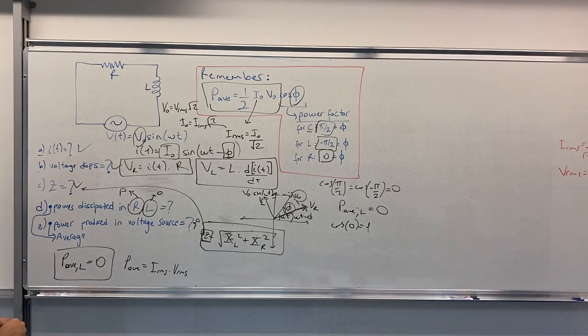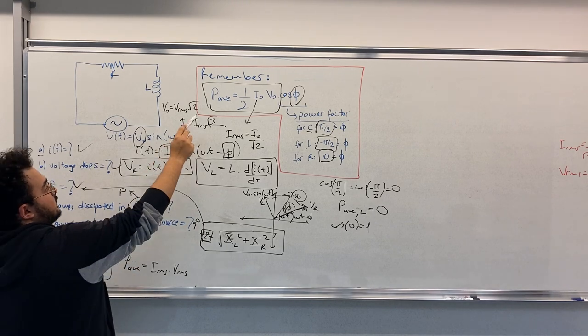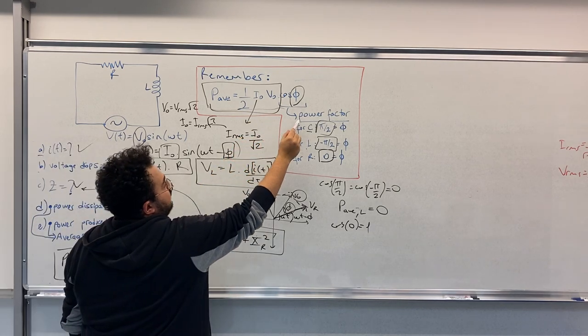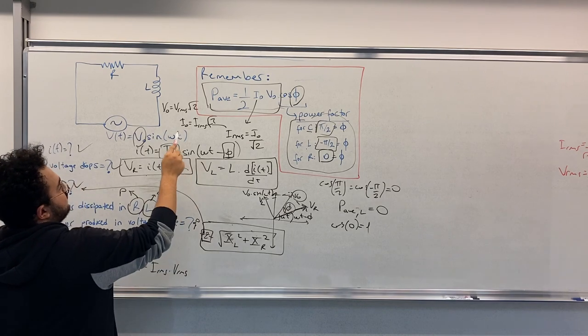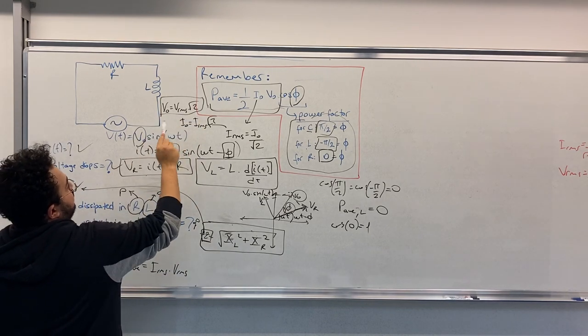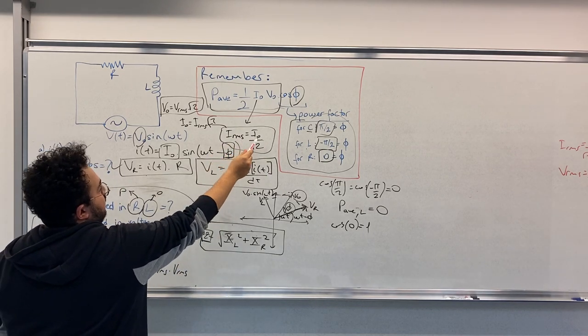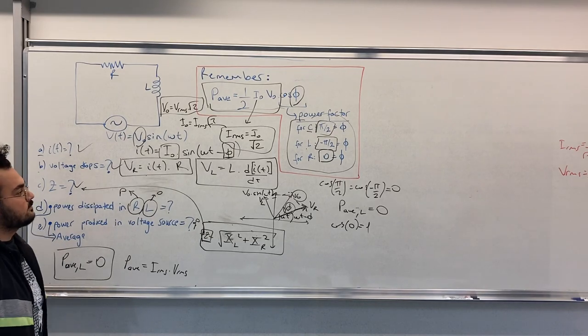This was all for the question. What you should remember is for power dissipation and producing part is this formula, and remember power factor for R, L, C separately, and keep in mind that IRMS equals I0 over square root 2. Okay, thank you for listening.